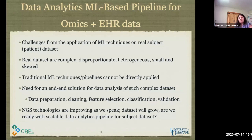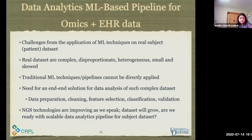NGS technologies are improving as we speak, so the real dataset will grow. At some point in one chunk we are going to have such a large amount of data that we cannot handle — so what do we do then? Also, datasets can get even more complex when you are combining omics — which includes genomics, proteomics, and others — plus electronic health record data. When you combine them, the dataset is even more complex and even more challenging.